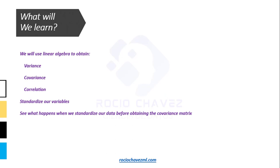Today, I will focus on showing you how you can obtain variance, covariance, and correlations using linear algebra, which allows us to process information quickly and efficiently. Additionally, we will standardize our variables and see the advantage of standardizing before obtaining the covariance matrix.